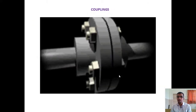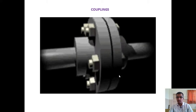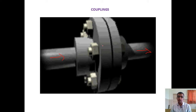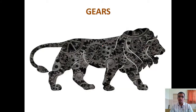Another power transmission mechanism is couplings. The driver shaft is connected to the driven shaft via couplings. There are various types of couplings that can be used to connect a driver shaft to a driven shaft. Broadly, these are the main mechanical means through which we can transmit power from one place to another.